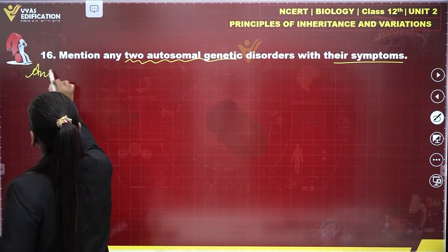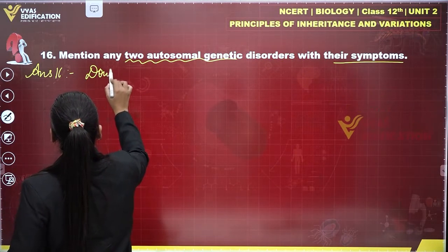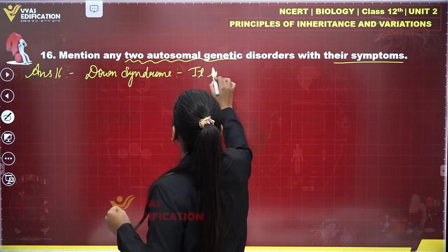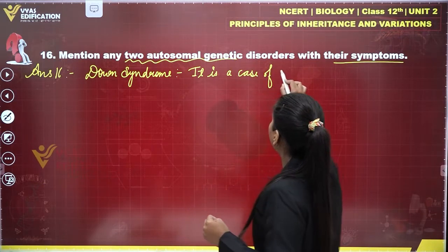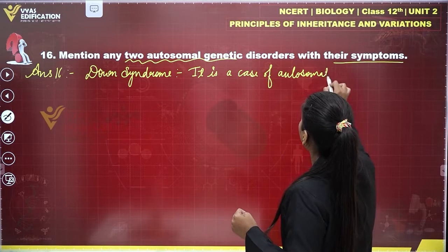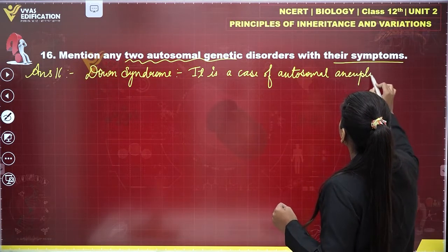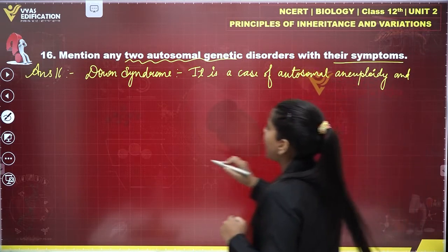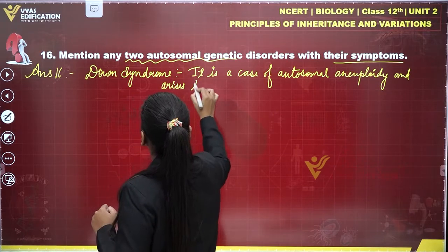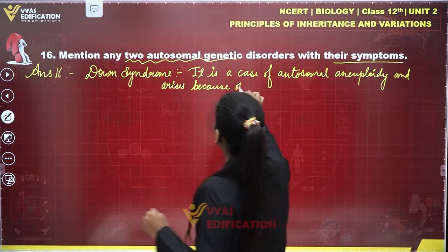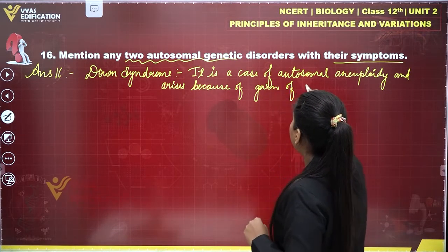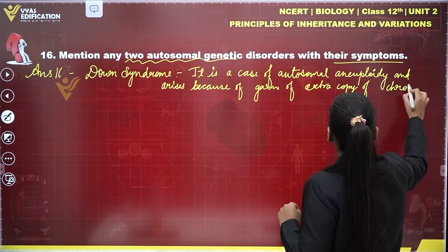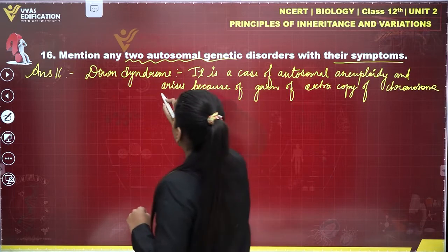Now writing the answer to question number 16 — first is Down syndrome. It is a case of autosomal aneuploidy and arises because of the gain of an extra copy of chromosome number 21.